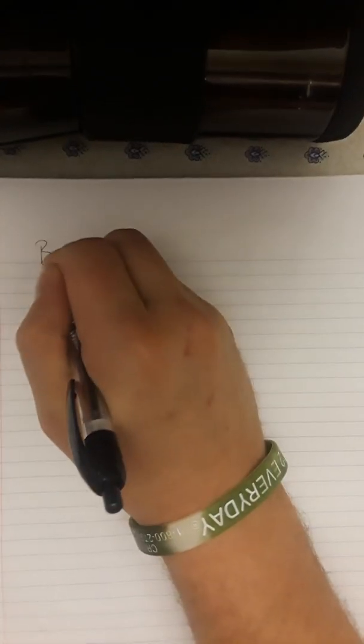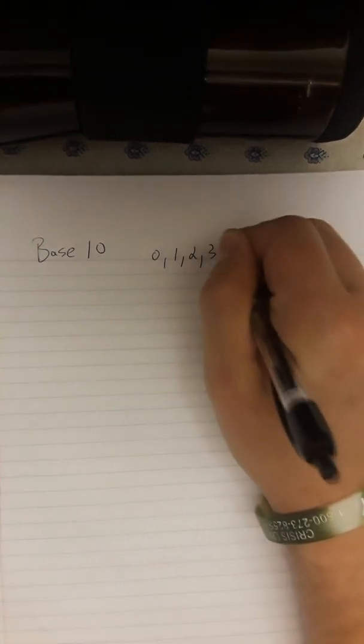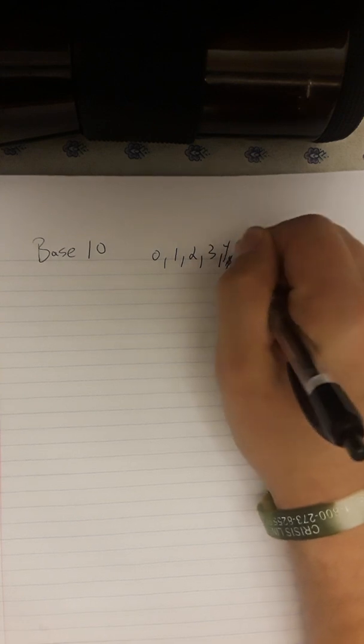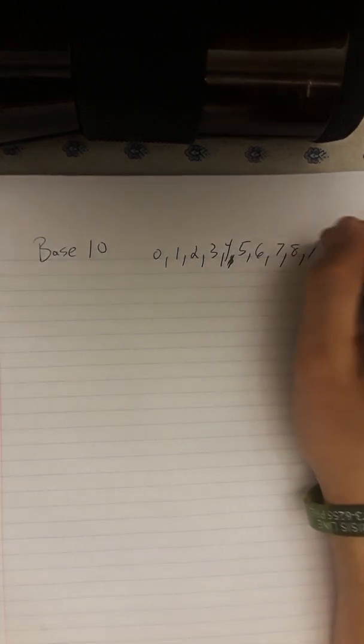So this is base 10. Base 10 goes through numbers 0, 1, 2, 3, 4, 5, 6, 7, 8, and 9. We don't go to 10. We start with 0. So that's 10 digits.